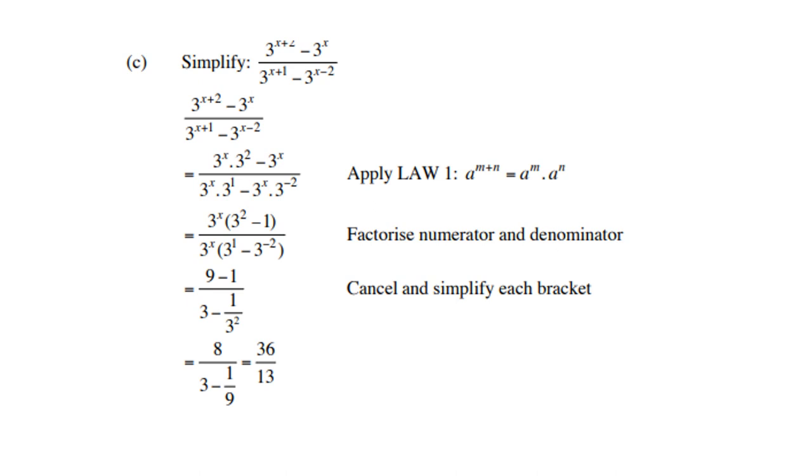Let's look at the next example. Simplify: 3 to the power x+2 minus 3 to the power x divided by 3 to the power x+1 minus 3 to the power x-2. So again, luckily they're all prime numbers. I can undo 3 to the power x+2 as 3 to the power x times 3 to the power 2. Do the same with the bottom, undo them. Then on top, 3 to the power x is the common factor.